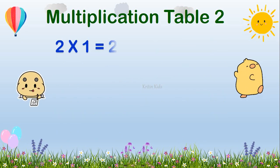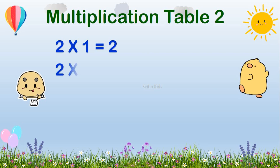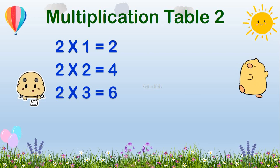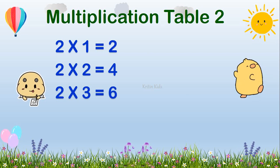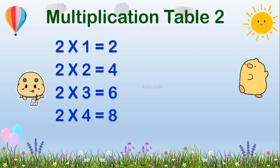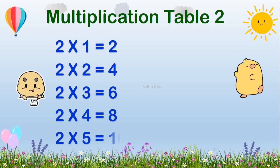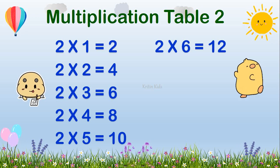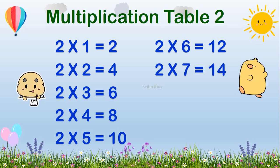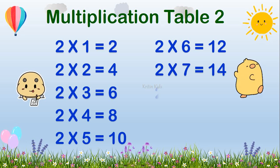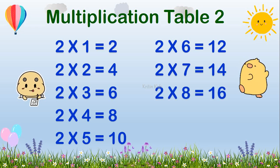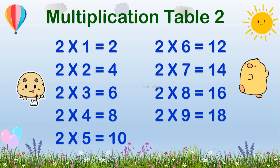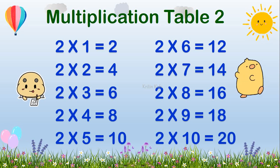Two, one's are two. Two, two's are four. Two, three's are six. Two, four's are eight. Two, five's are ten. Two, six's are twelve. Two, seven's are fourteen. Two, eight's are sixteen. Two, nine's are eighteen. Two, ten's are twenty.